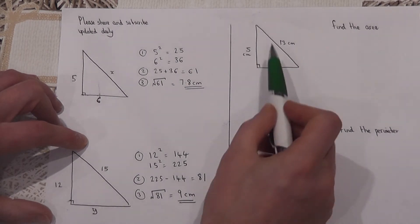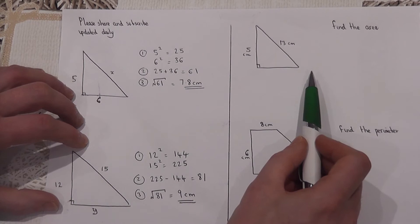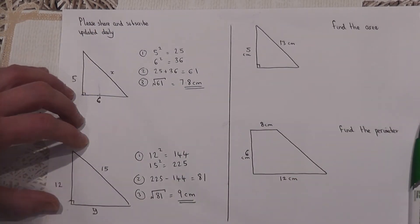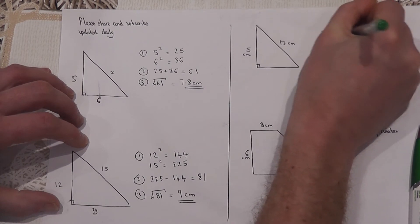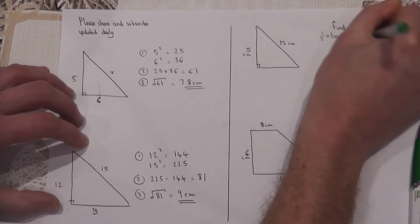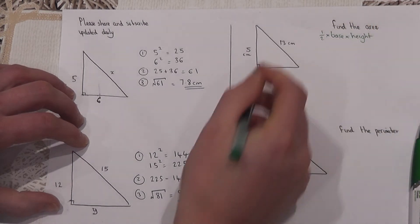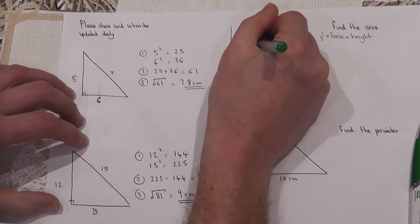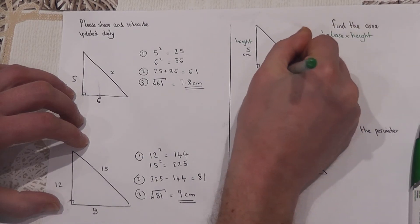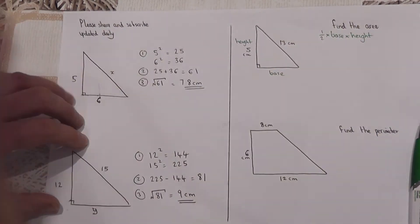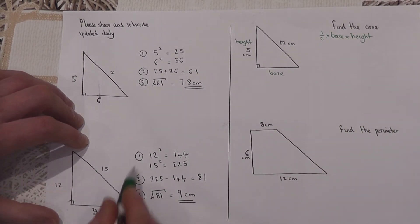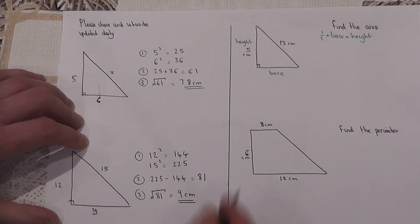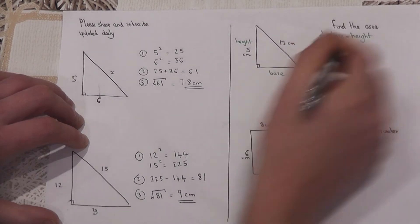The last two problems are problem solving questions involving Pythagoras. In this question we're asked to find the area. We know that to find the area of the triangle it's half of the base times by the height. We know the height is 5, but we don't know the base. However, we know the hypotenuse, so we can use Pythagoras to find the base.